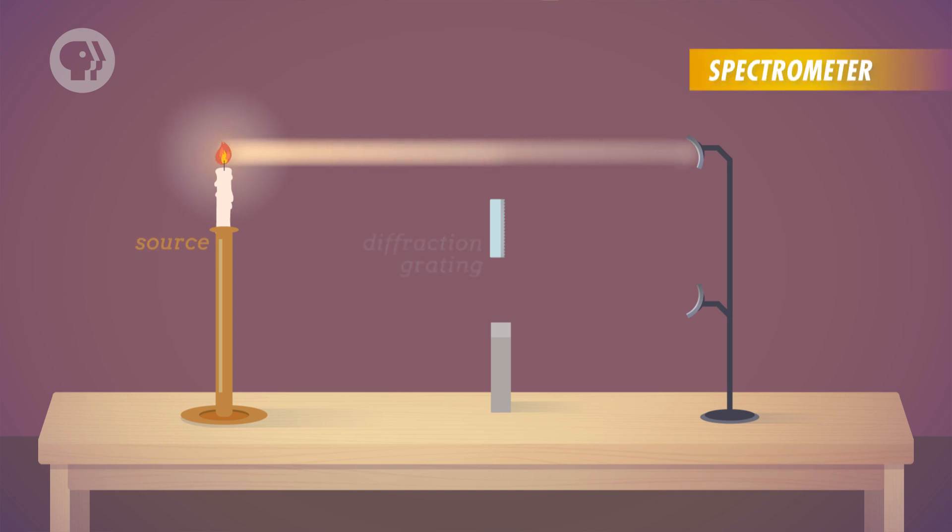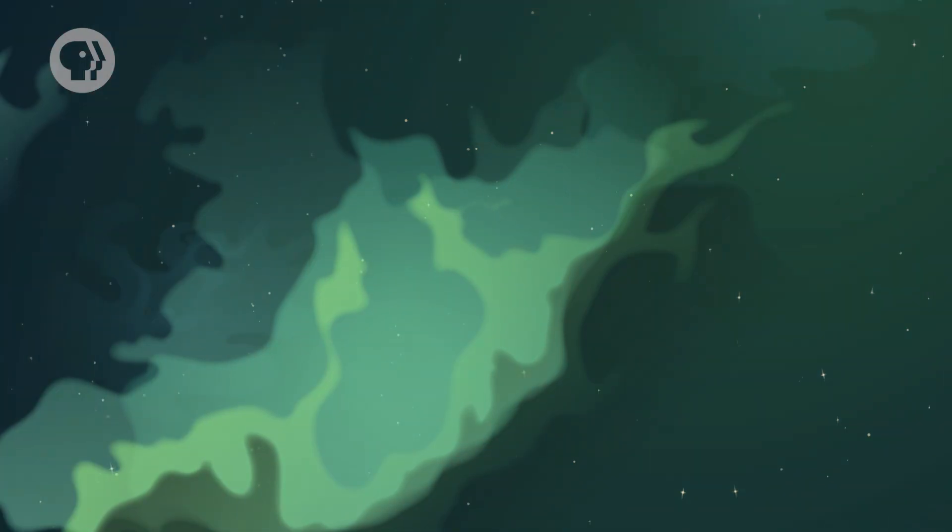To do that, you need a spectrometer – a tool that uses diffraction grating, or a prism, to separate the wavelengths. Let's say that you heat up a cloud of hydrogen until it emits light, and then you point your spectrometer at the cloud.